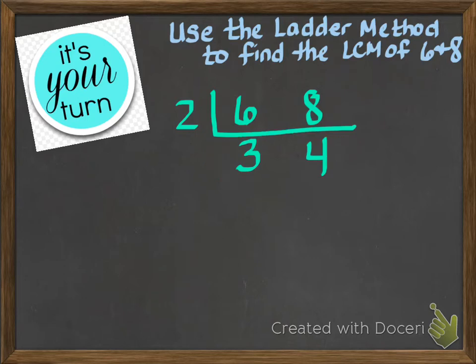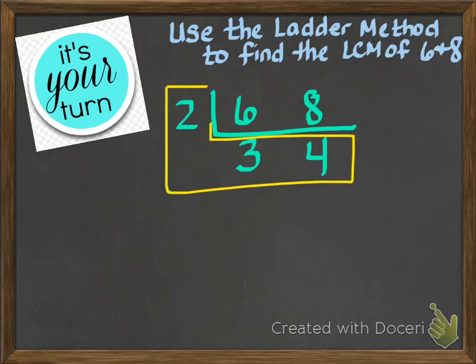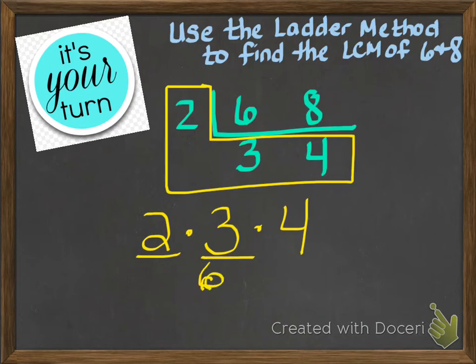What you're going to do now is take your L-shaped numbers here in the L, which is all your outside numbers, and you're going to multiply them together. So you have a 2 times a 3 times a 4. 2 times 3 gives you 6, and then if you take 6 times 4, you're going to end up getting 24. So your LCM for this problem is 24.